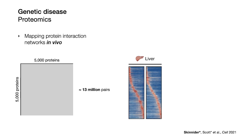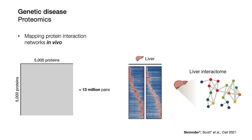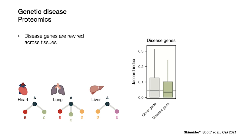With the right computational tools in hand, I can go back to our tissue dataset and pick out the tiny minority of interacting proteins from among the millions of possible pairs in each tissue. I'll highlight what we learned about genetic disease. We found that genes associated with human disease tended to be disproportionately rewired across tissues — they showed significantly more variation in which proteins they interacted with from one tissue to another. This is consistent with the idea that disease genes are involved in tissue-specific interactions that might mediate some of their tissue-specific effects.